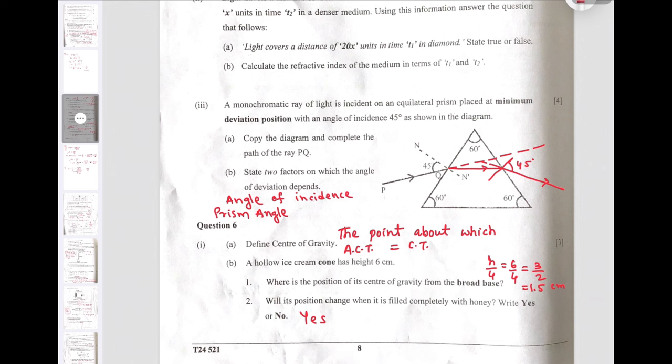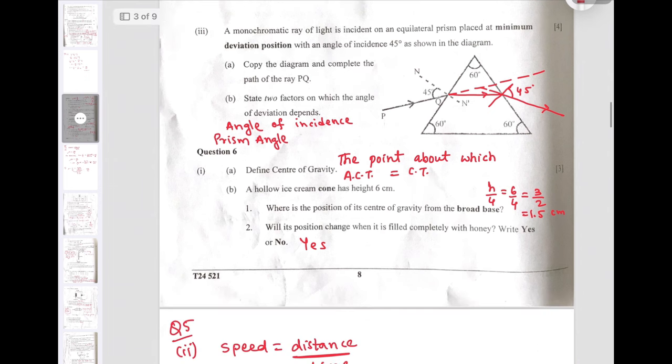Question number 6: Define the center of gravity. Center of gravity is a point about which anticlockwise torque is equal to clockwise torque. A hollow ice cream cone has height 6 cm. Where is the position of its center of gravity from the broad side? The center of gravity in case of cone from the broad side is at height h by 4 from the base. Using this fact, we get the required answer is 1.5 cm.